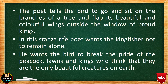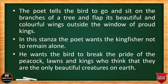The poet tells the bird to go and sit on the branches of a tree — 'get thee on boughs and clap thy wings before the windows of proud kings.' The poet tells the Kingfisher bird to go and sit on a tree branch and flap its beautiful, colorful wings outside the window of some proud kings, just outside the palace of the king.